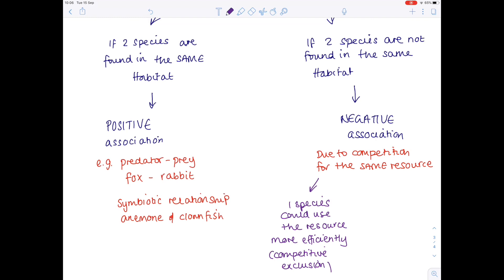Alternatively, because the two species don't want to directly compete for the same resource, they may alter how they use a particular resource or use the environment in order to avoid direct competition with each other, and that's known as resource partitioning.